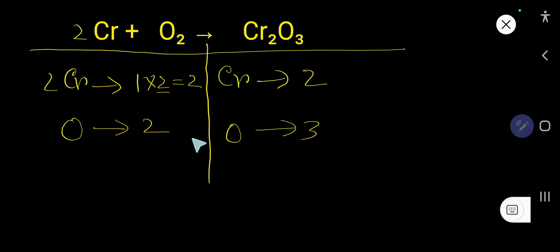Now chromium is balanced but oxygen is not balanced, here 2, here 3. So to balance oxygen you can multiply here by 3 that gives you 6. If you multiply here by 2 that gives you 6. That 2 must come before this oxygen, that is here.